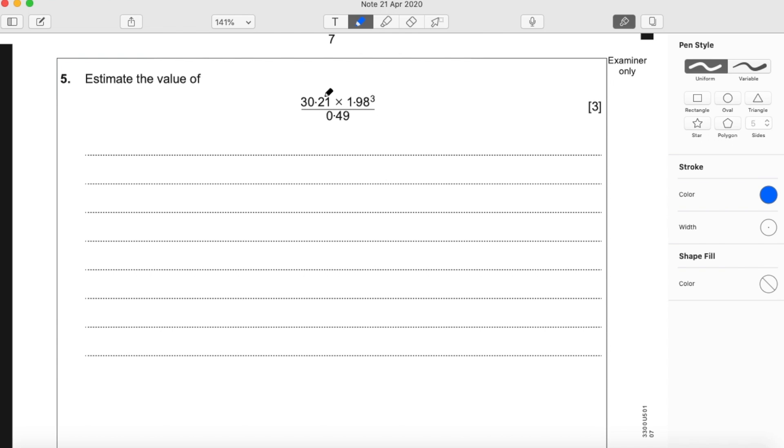I like to do this by thinking about a ruler. If this was 30.21 centimeters, that's 30 centimeters with 2 millimeters and 1 tenth of a millimeter. On our ruler we'd say that's close enough to 30 centimeters. So we'll estimate 30.21 as 30.